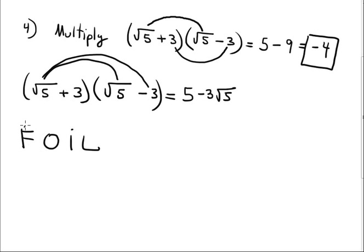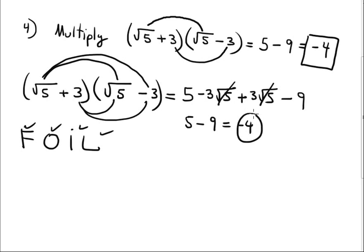First outer inner. Inner, this is plus 3 radical 5, and last, it's minus 9. Okay, always happens when they are conjugate, this is opposite, completely opposite sign, cancels out. The final answer is 5 minus 9, negative 4, same answer.